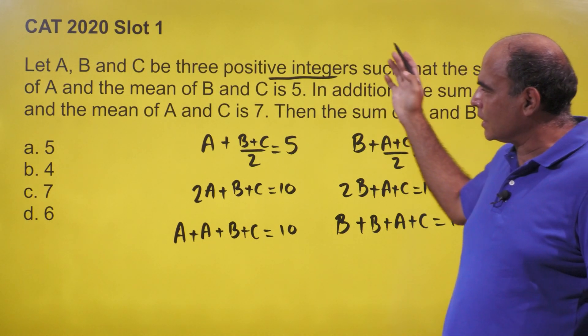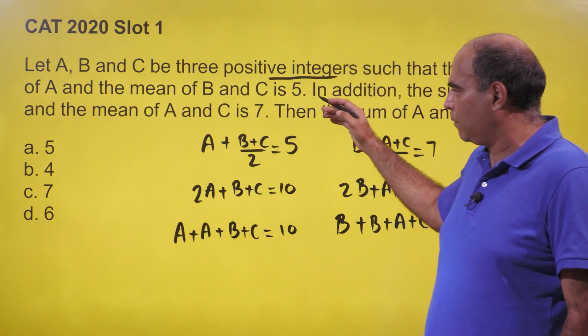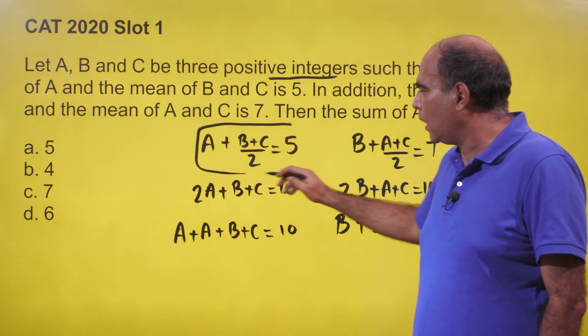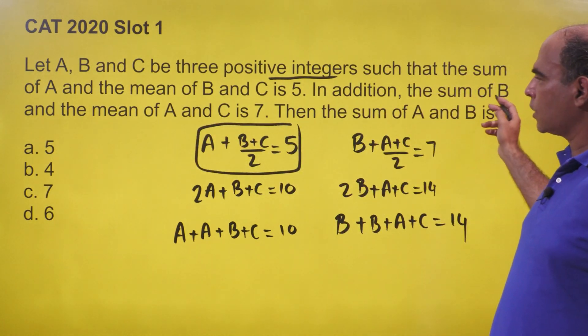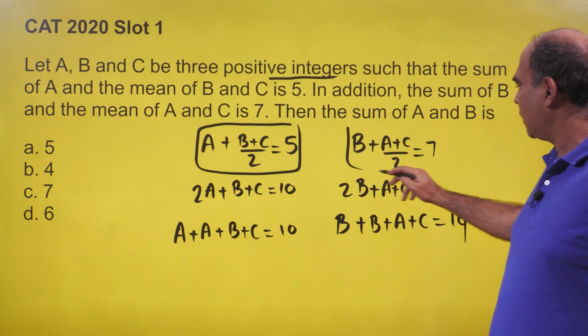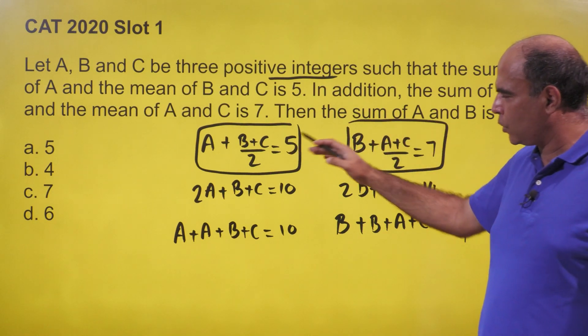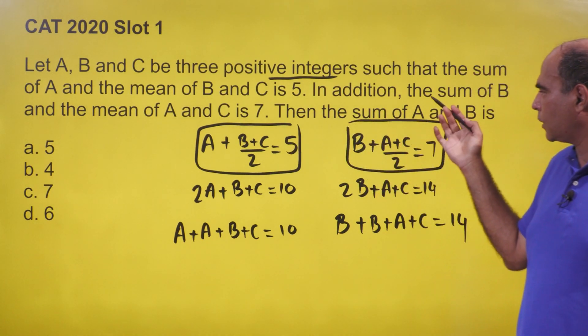The sum of A and the mean of B and C is 5. In addition, the sum of B and the mean of A and C is 7. So we have two equations and three unknowns. They're asking for the sum of A and B.